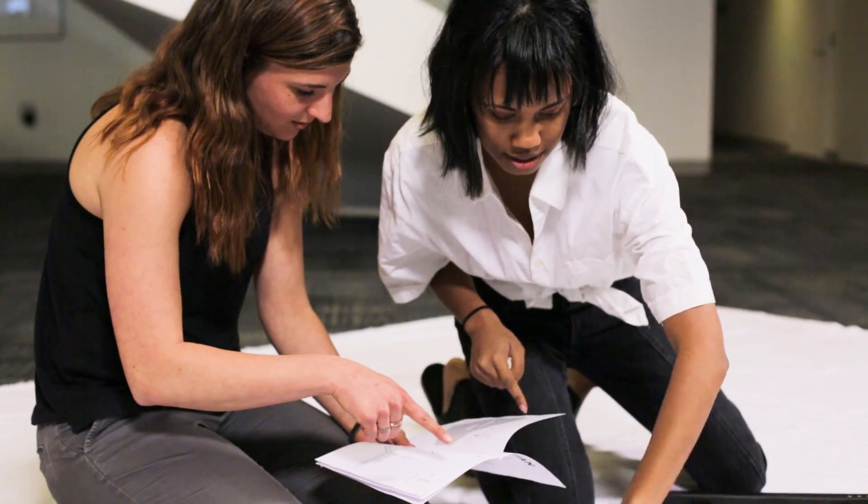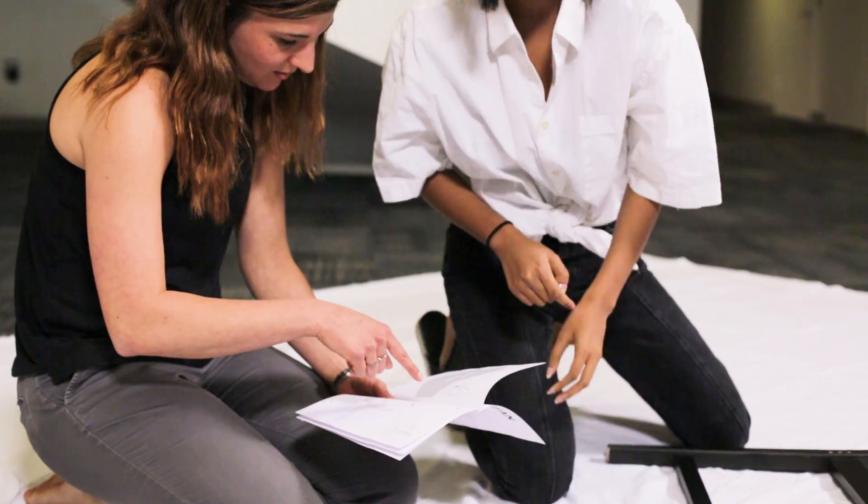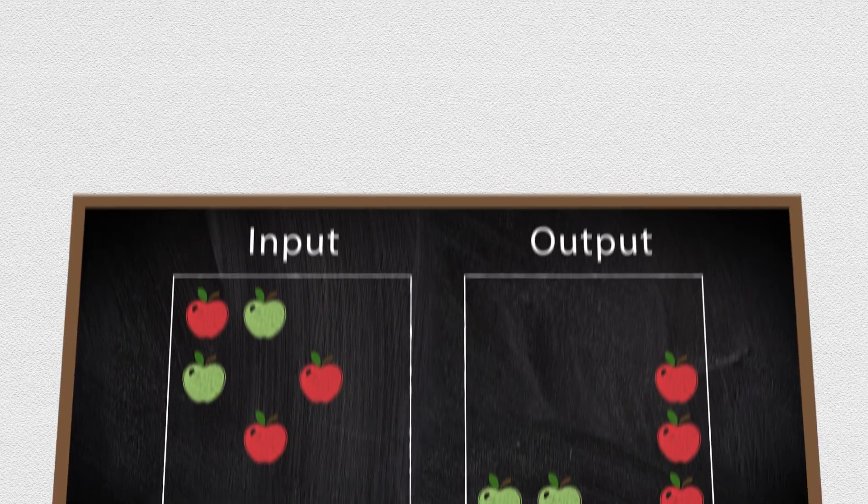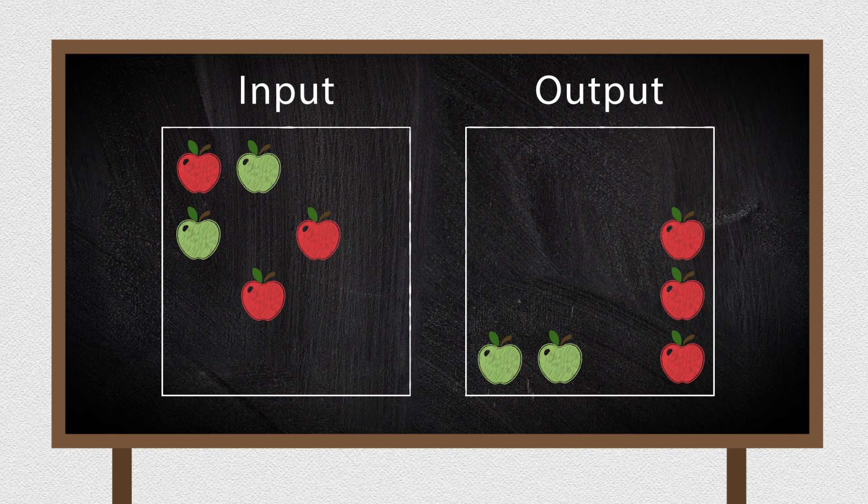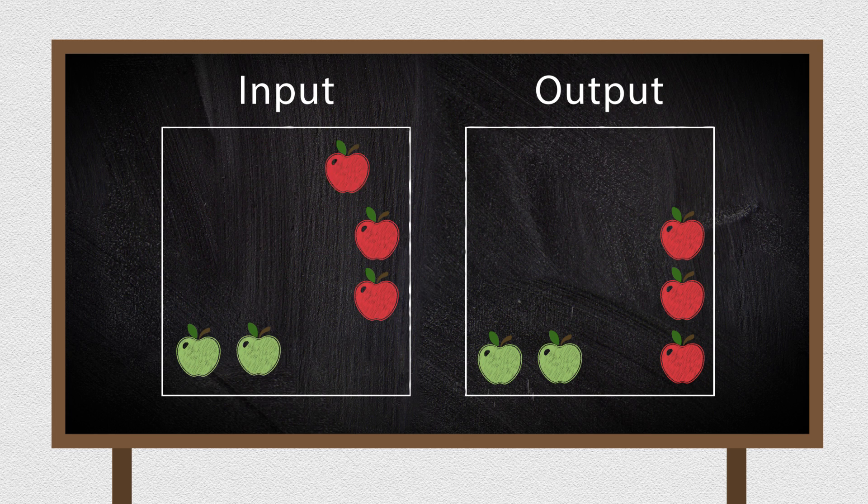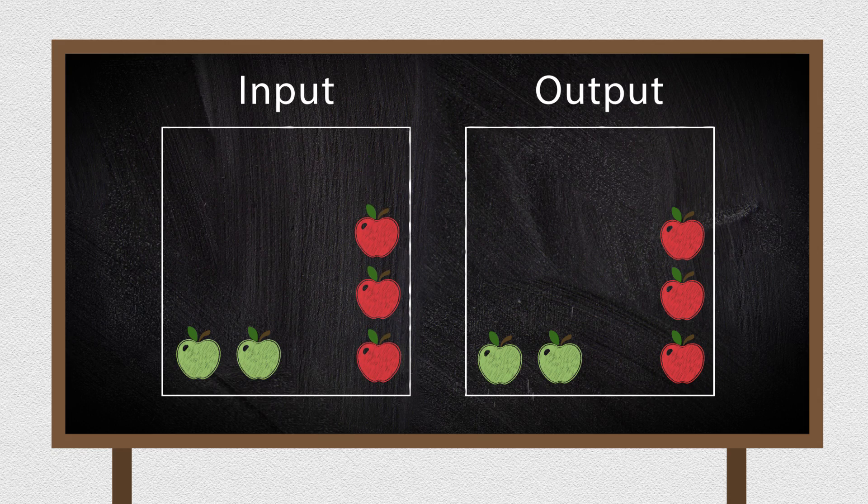Like looking at the instructions for assembling an IKEA chair. Let's take an easier example. These two images of apples. The input on the left and the output on the right. For us, it's easy to see how the apples are reorganized by position and color.